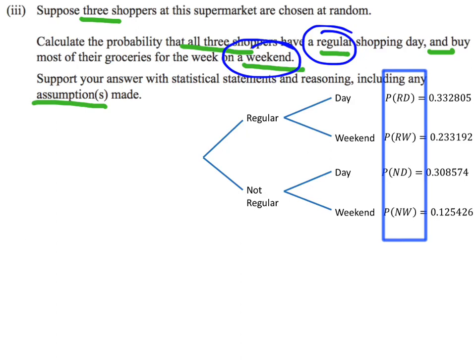Looking at the different combinations on the tree diagram: RD is regular on a weekday — that does not meet the criteria. Regular on the weekend — that does meet the criteria. Not regular weekday — doesn't meet the criteria. And not regular weekend — also does not meet the criteria. So our probability, reading off the tree diagram, is 0.233192.